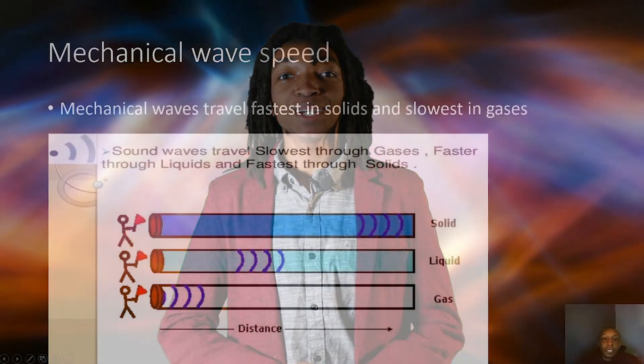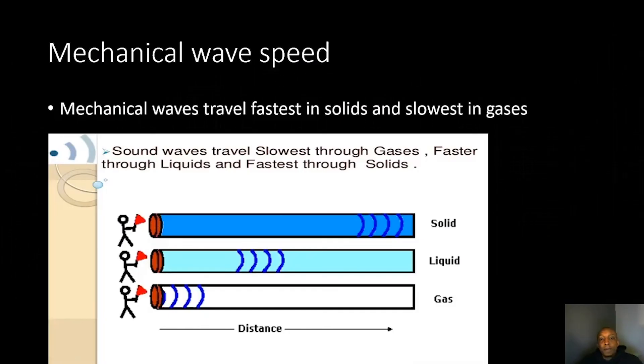Let's explain by taking a look at one of our previous videos. Mechanical waves travel fastest in solids and slowest in gases. So if you notice, sound waves travel slowest through gases, faster through liquids, and fastest through solids. And the reason why is because mechanical waves need a medium in order to travel. If we look at how the particles are set up in solids, the particles are close together, they're tightly packed. So it's easier for those waves to travel in the solids because the solid particles are closer together.